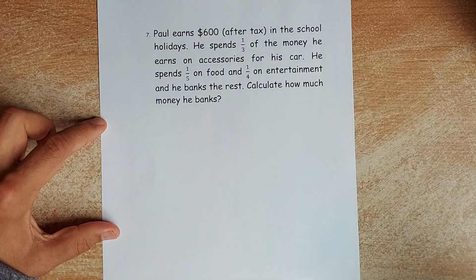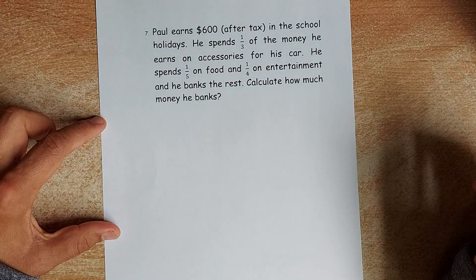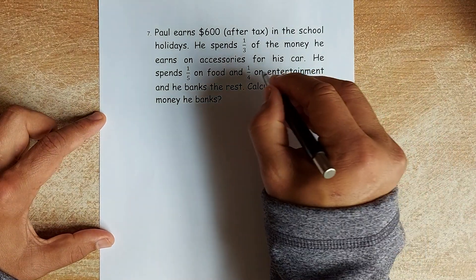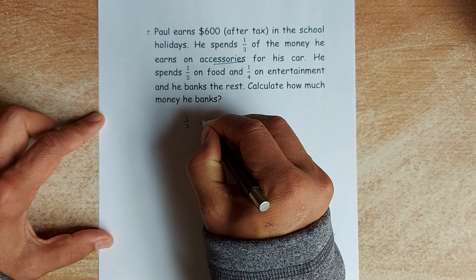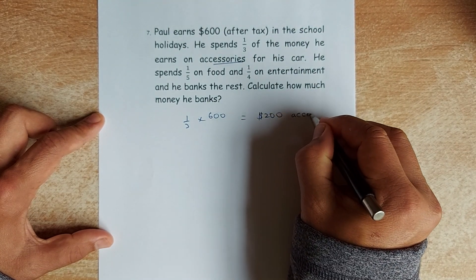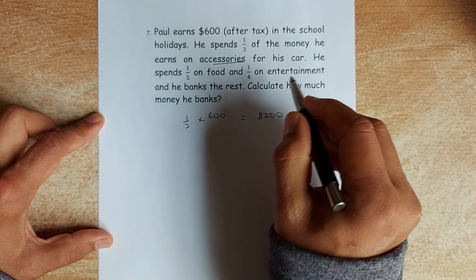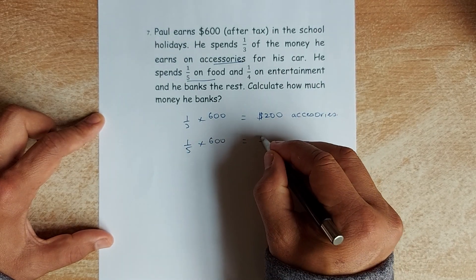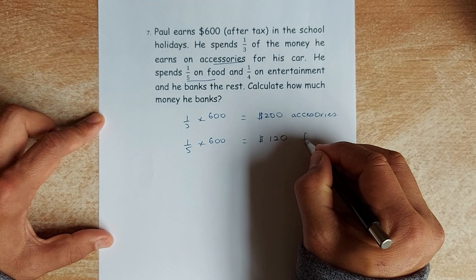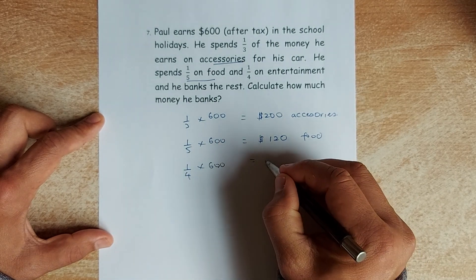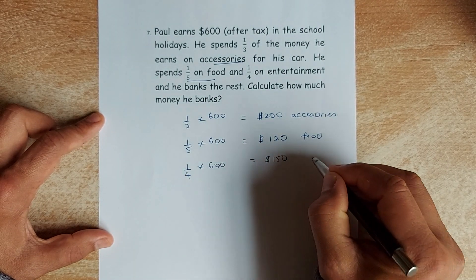We shall carry on now. Question 7 and 8. Paul earned $600 after tax in a school holiday. He spent one third of his money on accessories for his car. So one third of $600, he spent $200 on his accessories. And then he spent one fifth on food. So one fifth of the $600. So $600 divided by 5 is going to be $120 on food. And he's going to spend one quarter of $600 on entertainment. $600 divided by 4 is going to be $150 on entertainment.